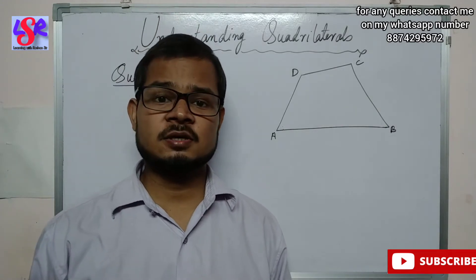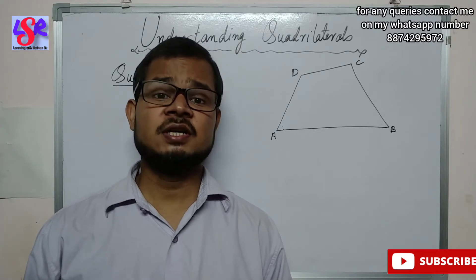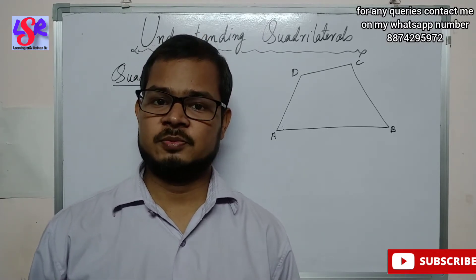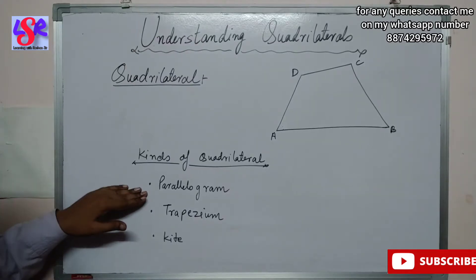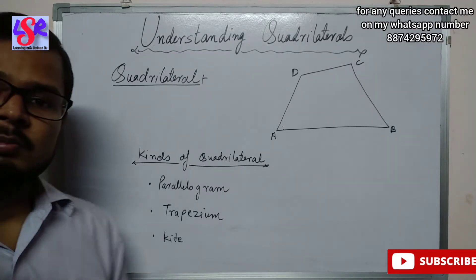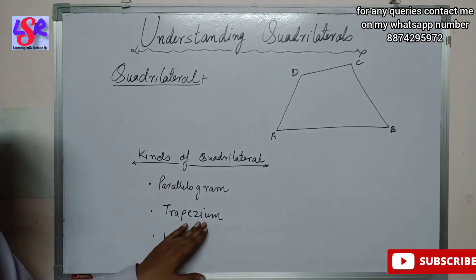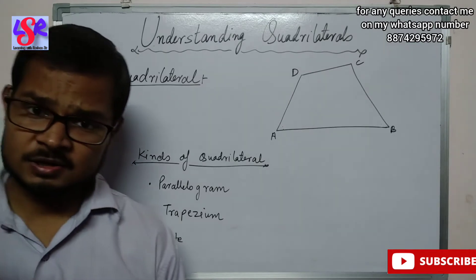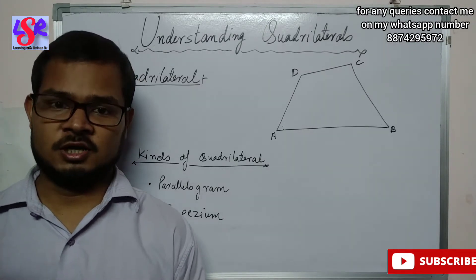On the basis of the sides and arrangement of the angles, we have three different types of quadrilaterals: parallelogram, trapezium, and kite. The parallelogram is a figure in which both pairs of opposite sides are parallel. In the case of trapezium, only one pair of opposite sides is parallel, and in the case of kite, there are no parallel sides but two adjacent sides are of equal length.